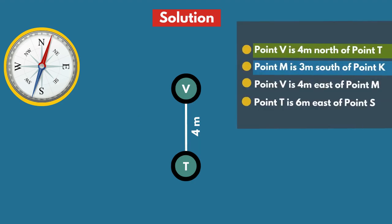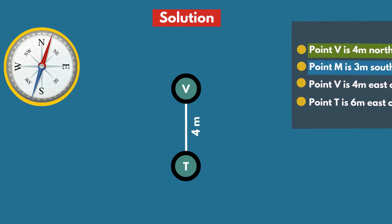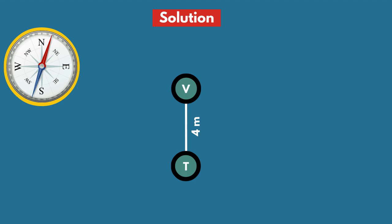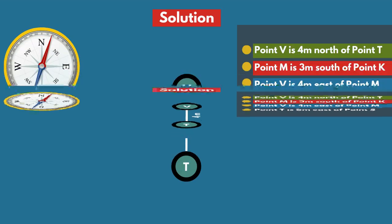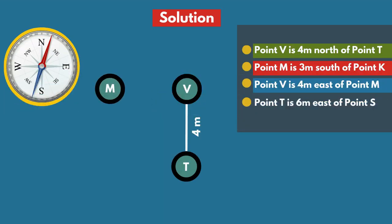Next statement: Point M is 3 meters south of point K. This statement is not related to the diagram, so skip the statement and go to the next statement. Point V is 4 meters east of point M. Here, this is point M, and point V is 4 meters east of point M.